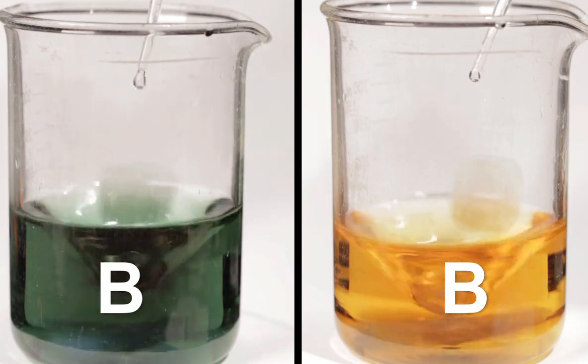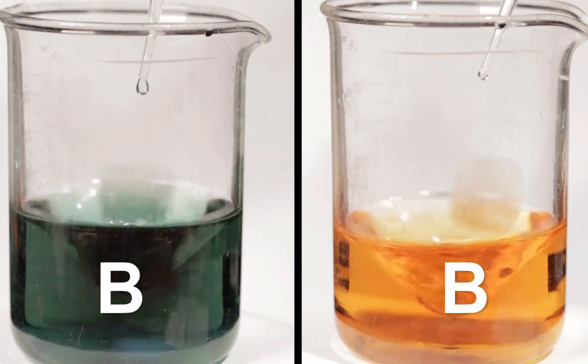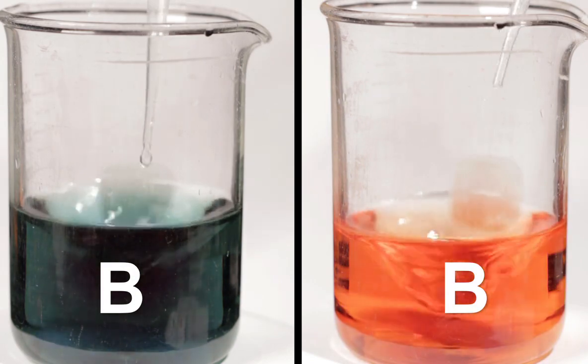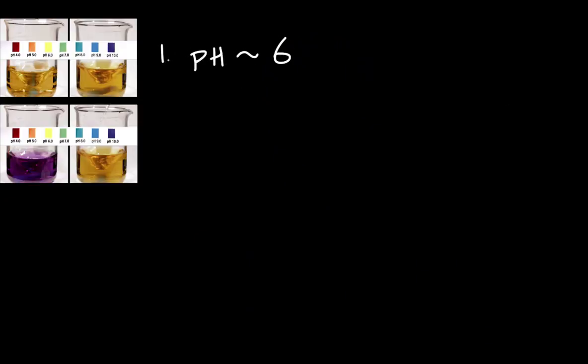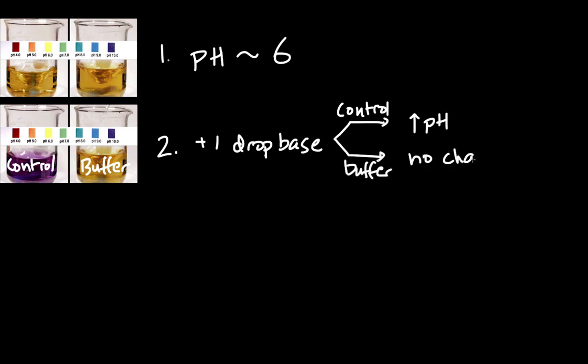In chemistry, solutions that resist changes to their pH when acids or bases are added are called buffers. Solution B in our demo was a buffer solution. Let's develop a molecular level model of solution B to try and figure out how buffers work. First, let's review our experimental data and list the observations our model must satisfy. One, the starting pH was around 6. Two, when we added one drop of strong base, which was enough to change the pH of our control solution, the pH of our buffer solution did not change.